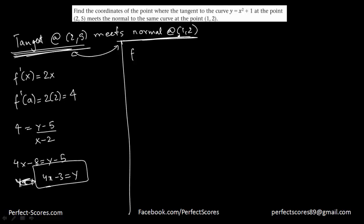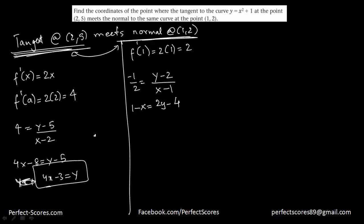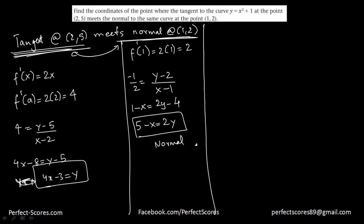Now for the normal at (1, 2): f'(1) = 2 times 1 = 2, so the normal slope is negative 1 over 2. Applying the formula: negative 1 over 2 equals (y minus 2) over (x minus 1), which gives x minus 1 equals negative 2(y minus 2), so 1 minus x equals 2y minus 4, and hence 5 minus x equals 2y. That is the equation of the normal.